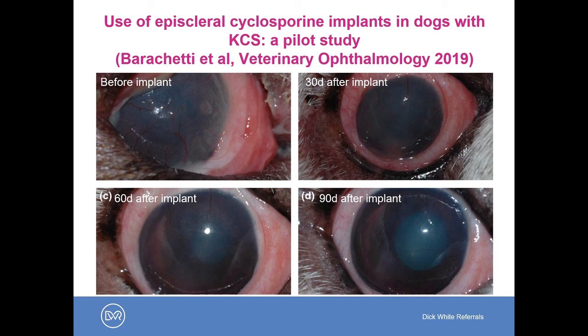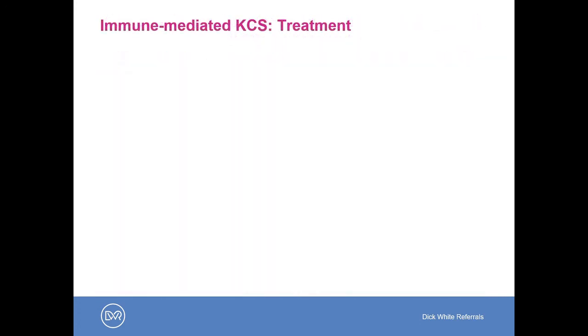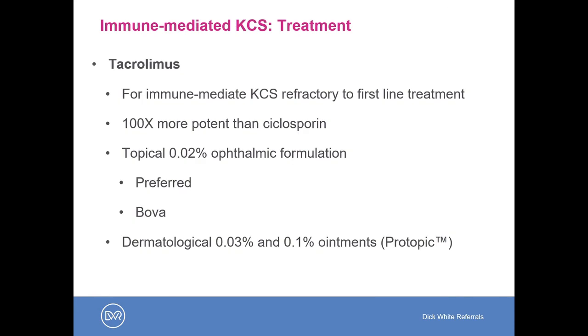It looks like this could be a very helpful treatment for dry eye. We don't really know how long these implants last, but it's likely they'll need replacing at least every year or so. So, what option do we have if cyclosporine 0.2% doesn't work?